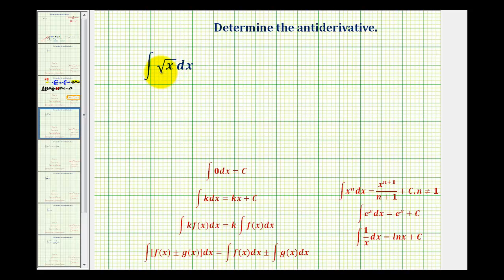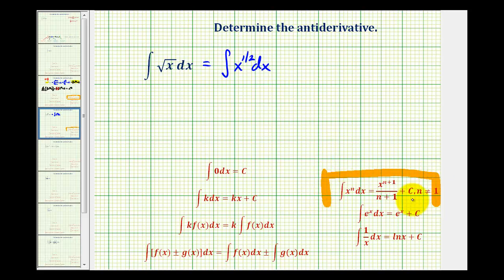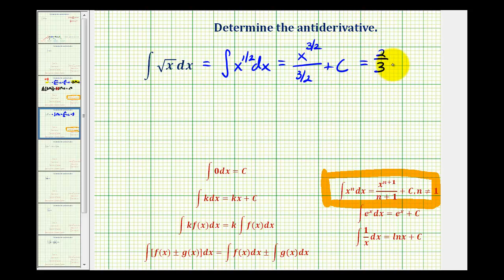Here we want to determine the anti-derivative of the square root of x with respect to x. Just like when determining derivatives, we need to rewrite this as a rational exponent. So we'll have the indefinite integral of x to the 1/2 with respect to x. Now we'll apply the power rule of integration. The anti-derivative will be x to the 1/2 plus 1, that's 3/2, divided by 3/2 plus c. But we can't leave it in this form — dividing by 3/2 is the same as multiplying by 2/3, giving us 2/3 x to the 3/2 plus c.